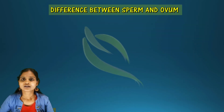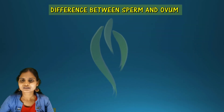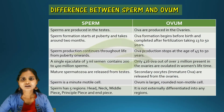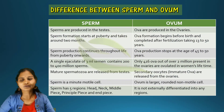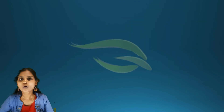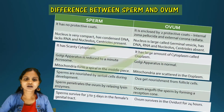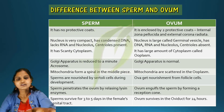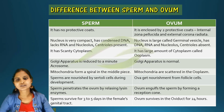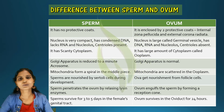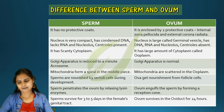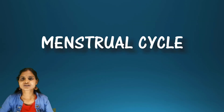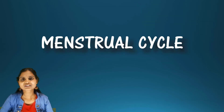A complete chart showing all the differences between sperm and ovum has been provided together so it will be easy to write down and understand. In the next section, the menstrual cycle will be explained.